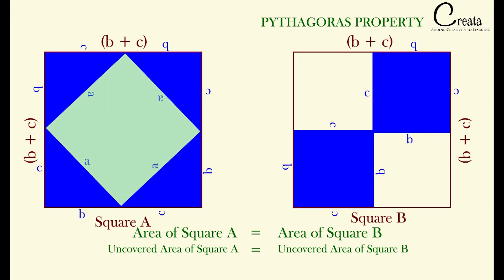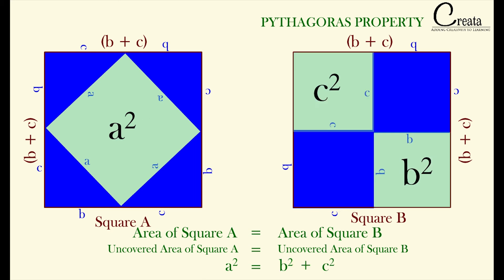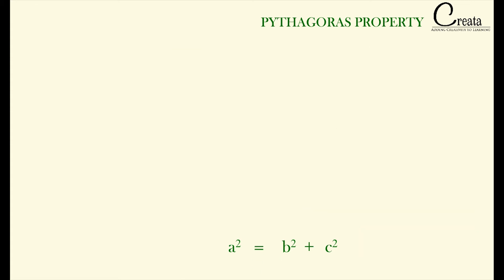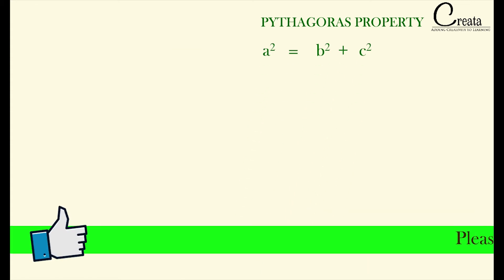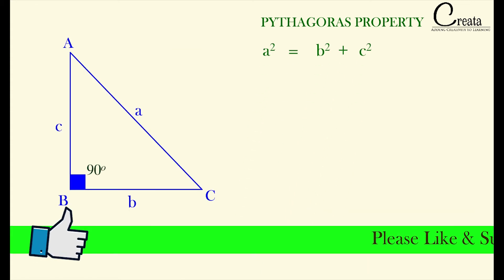We are left with: uncovered area of square A equals uncovered area of square B. The uncovered area of square A is A squared, and the uncovered area of square B is the two small squares, that is B squared plus C squared. So we get A squared equals B squared plus C squared — this is the Pythagoras property.